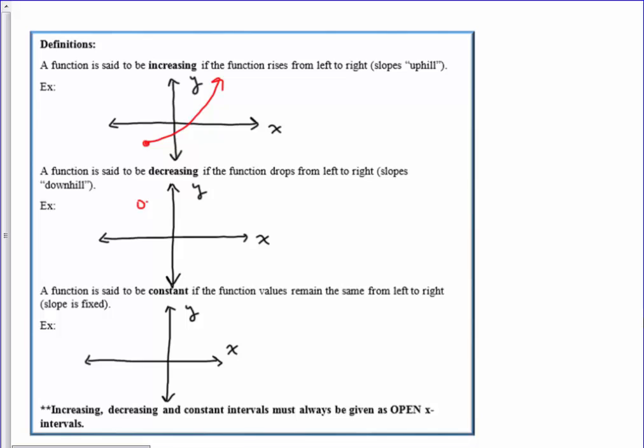So let's say we have, as an example, this function. That function would be decreasing because as you look at it from left to right, then you see that your function is going downhill.